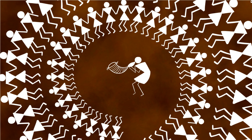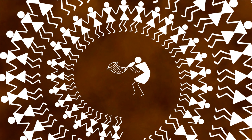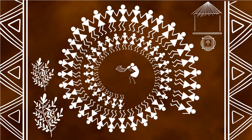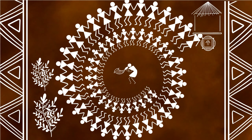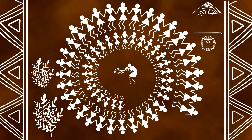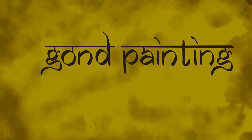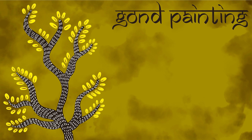One of the central aspects depicted in many Warli paintings is the Tarpa dance. The Tarpa, a trumpet-like instrument, is played in turns by different village men. Men and women entwine their hands and move in a circle around the Tarpa player. The circle formation of the dancers is also said to resemble the circle of life.